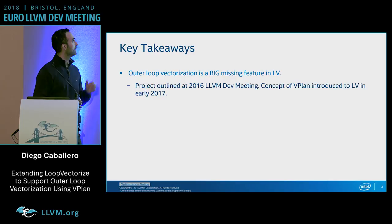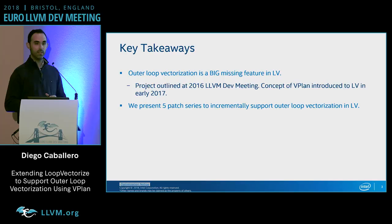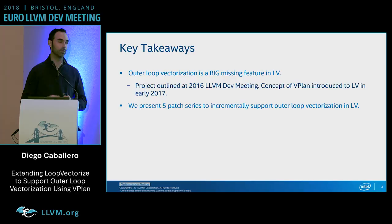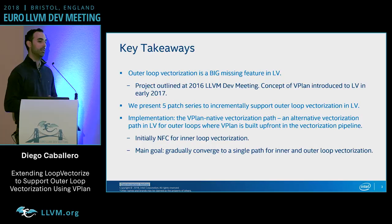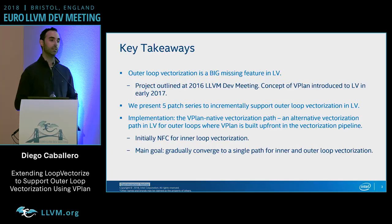For this particular program today, we present five patch series that will incrementally bring support for out-of-loop vectorization in loop vectorizer. We will start supporting very simple cases and progressively add support for more sophisticated scenarios. To implement this, we want to introduce the vPlan native vectorization path — an alternative vectorization path in loop vectorizer that we will initially use only to vectorize outer loops, where we will bring vPlan up front in the vectorizer pipeline.